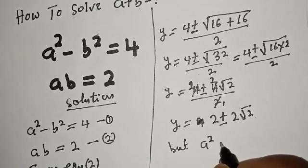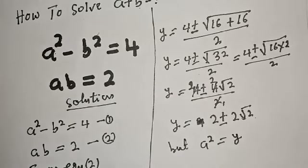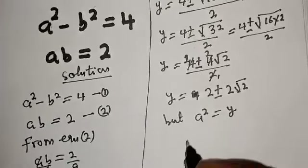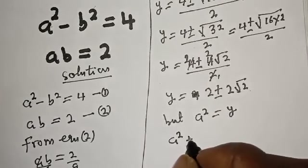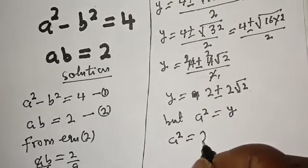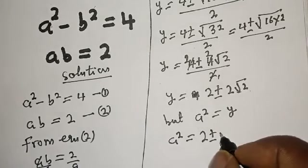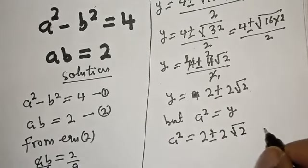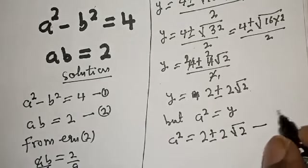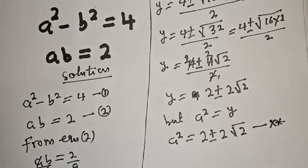But a squared is equal to y. Now, a squared is equal to 2 plus or minus 2 root 2. Let's call this equation star star.